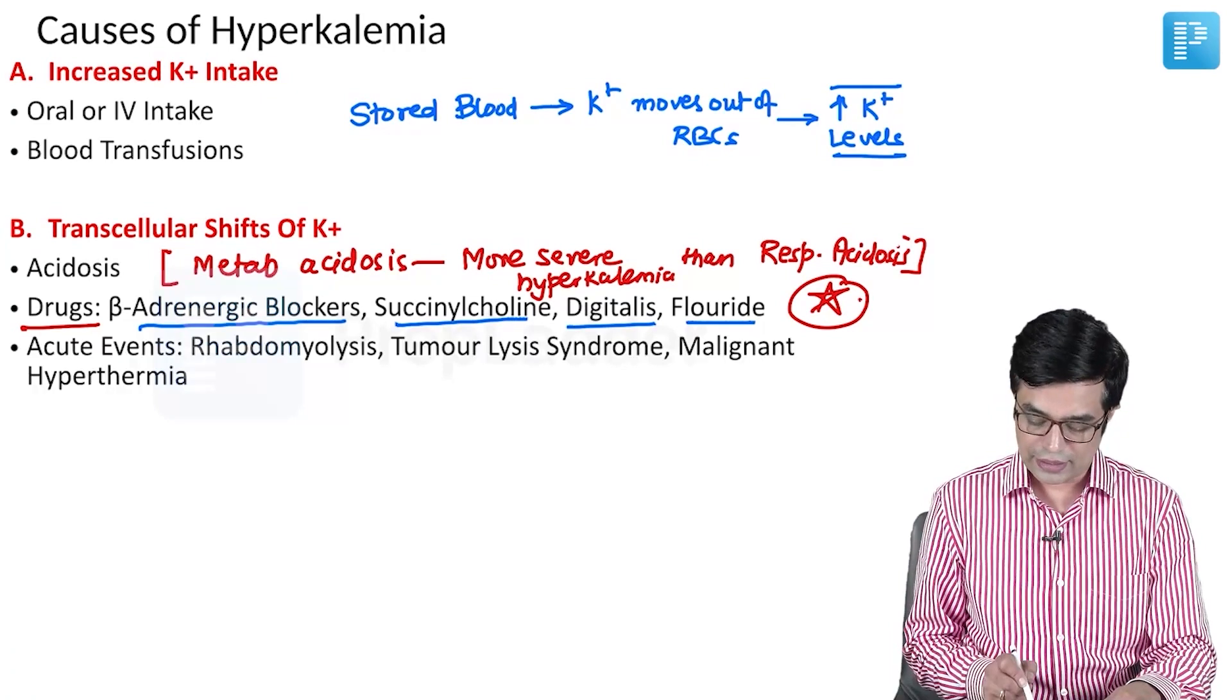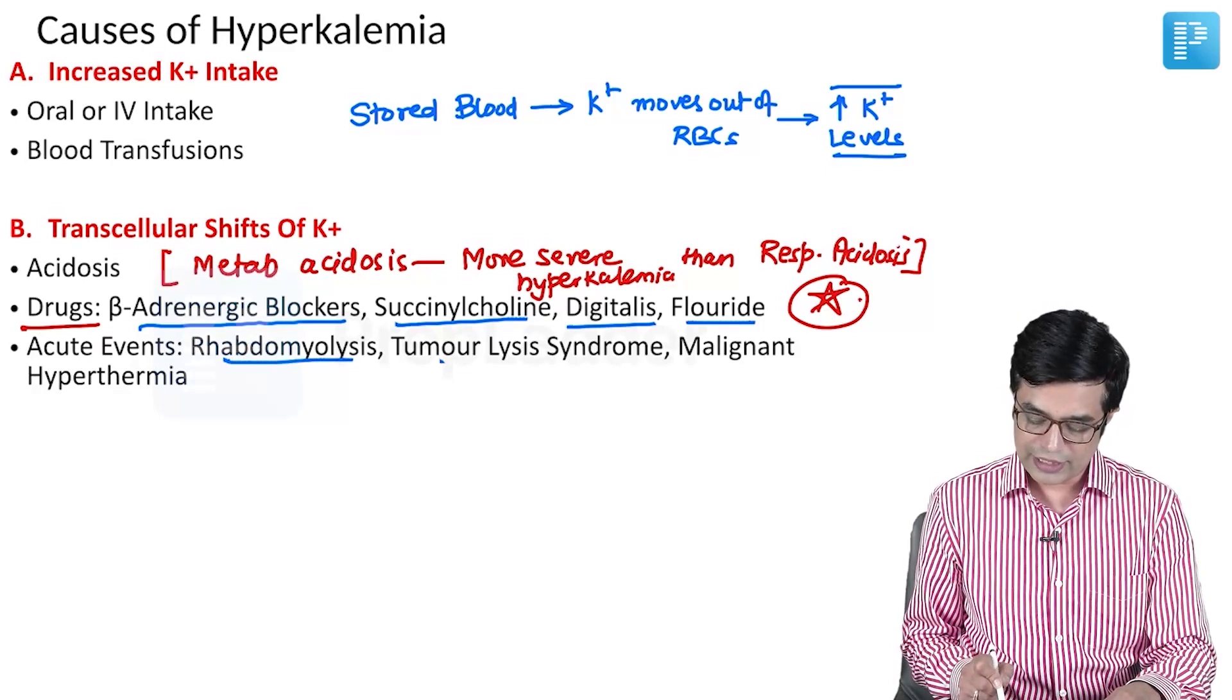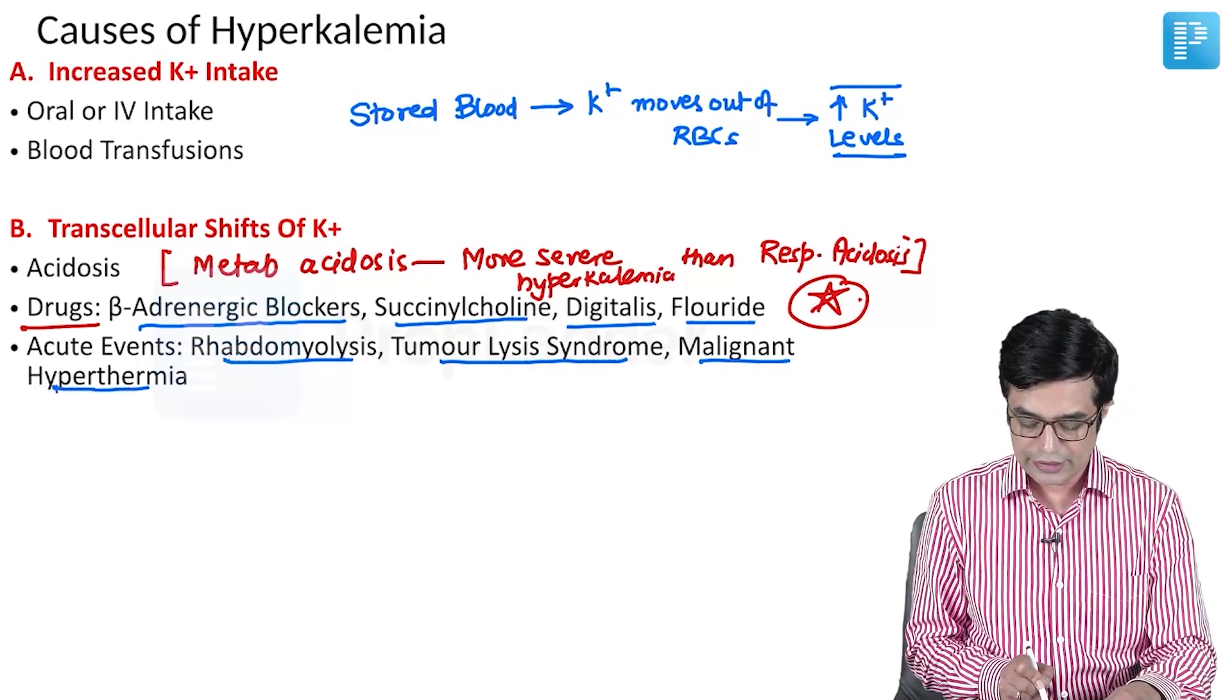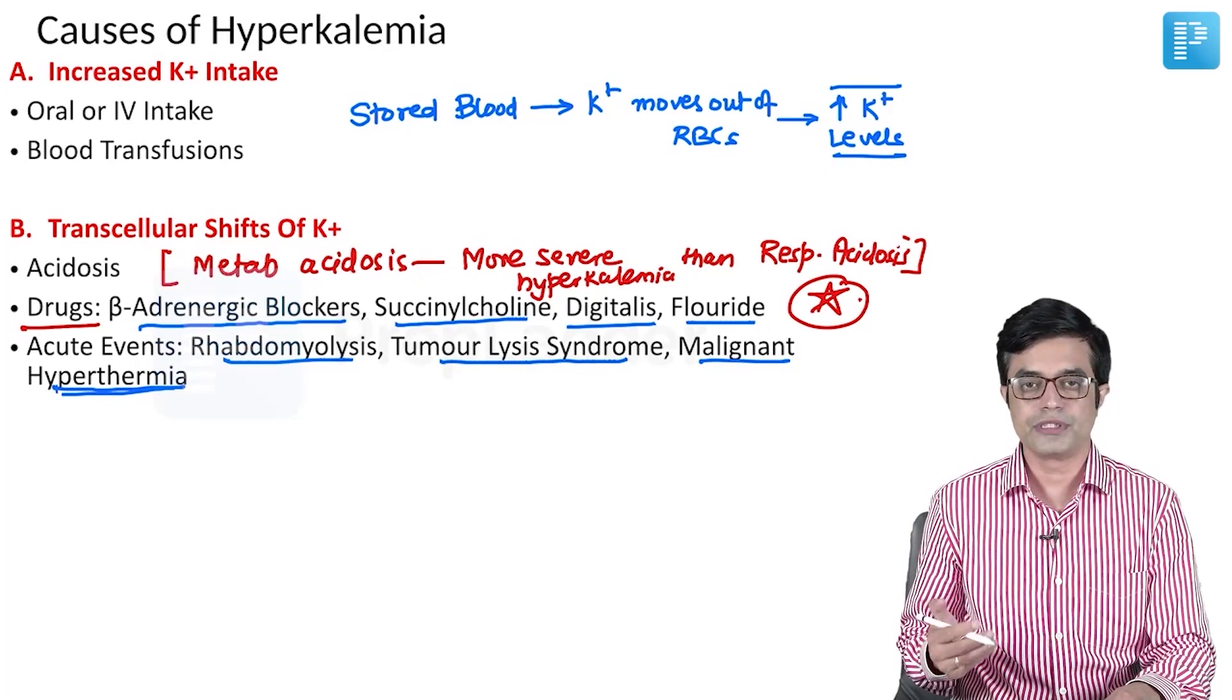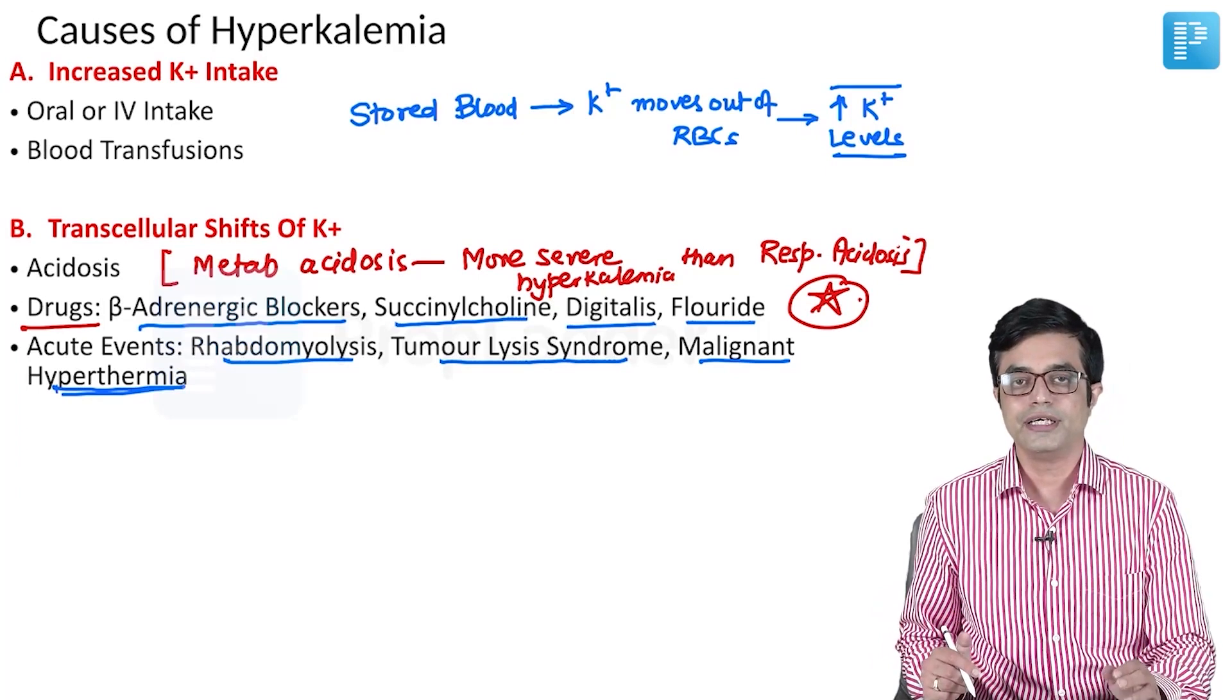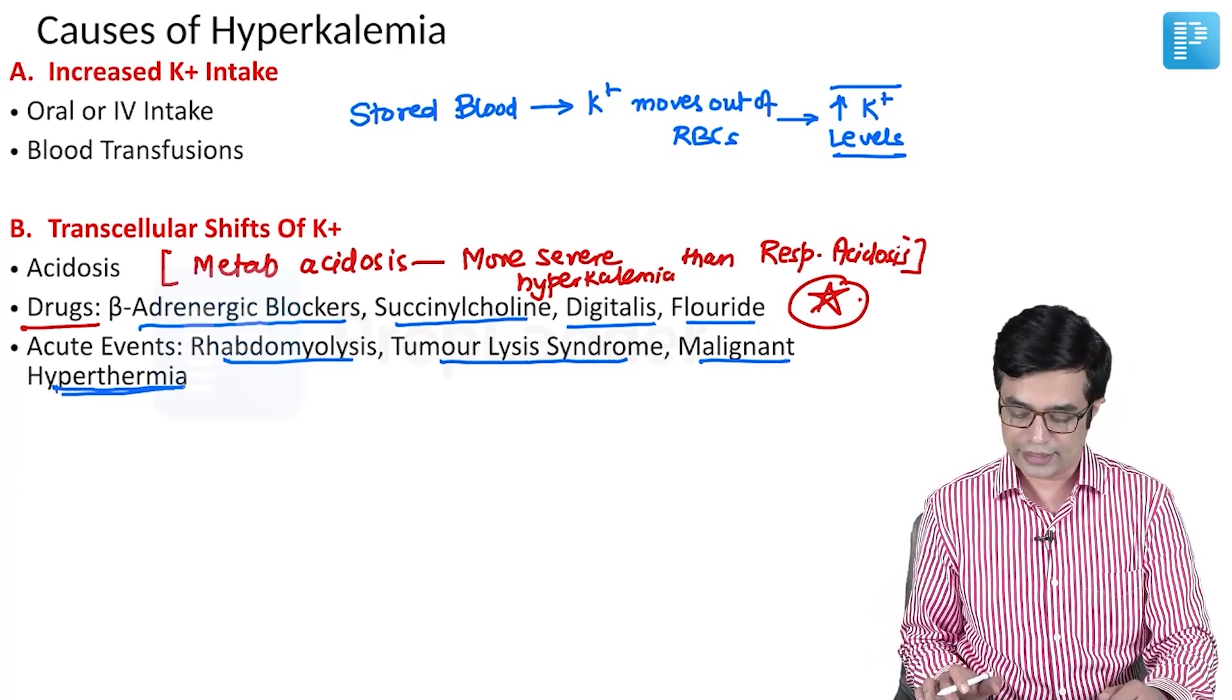Third category are acute events like rhabdomyolysis, tumor lysis syndrome in multiple malignancies, and malignant hyperthermia which is a complication of certain anesthetics. They all can produce hyperkalemia by causing increased potassium movement from inside to outside the cell.